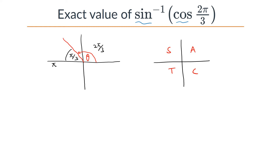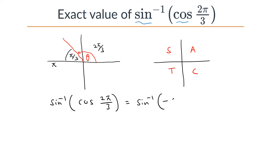Now we apply the reference angle method. We rewrite sine⁻¹(cos(2π/3)). Since the angle is in the second quadrant, cosine is negative, so cosine(2π/3) = −cosine(π/3). We know cosine(π/3) = 1/2 from the common exact values table, so this becomes sine⁻¹(−1/2).